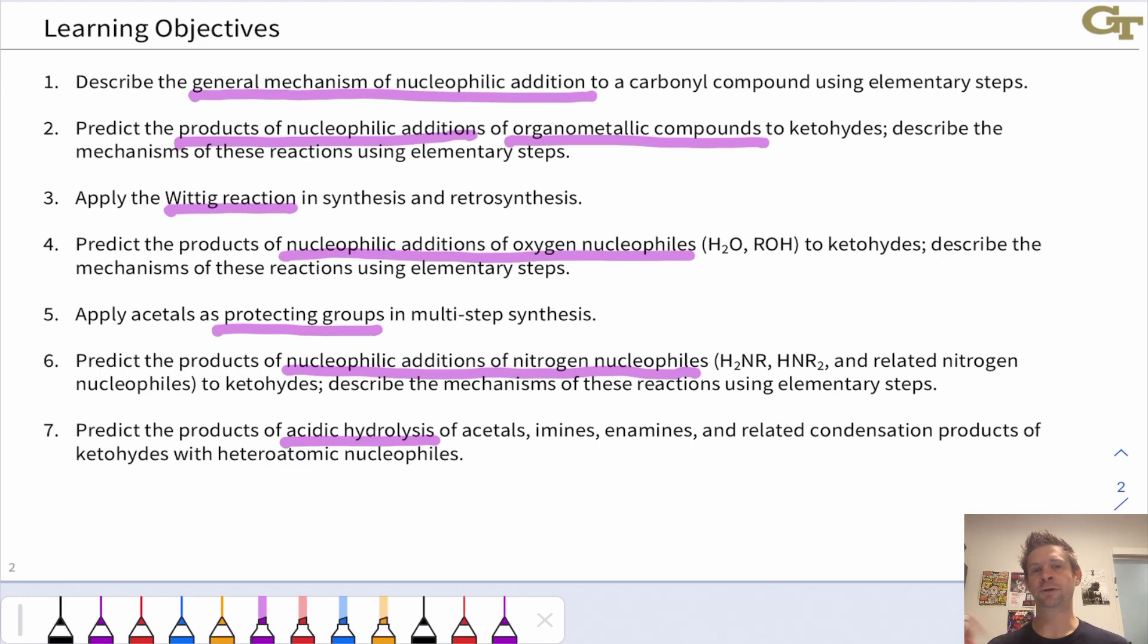Finally, we'll look at the reverses of these additions of heteroatomic nucleophiles to ketones and aldehydes, allowing us to get back the carbonyl group if we start with a CN double bond or an acetal, for example.